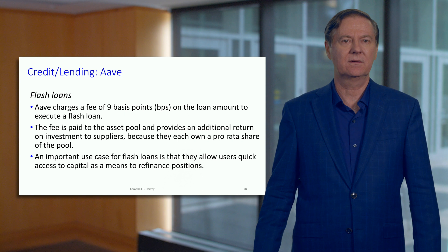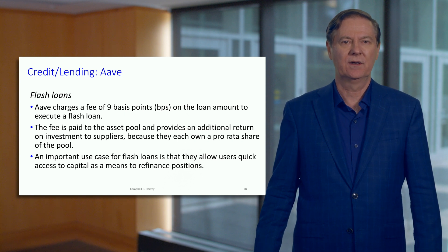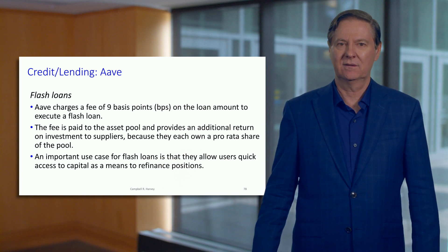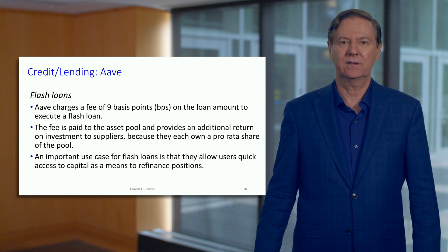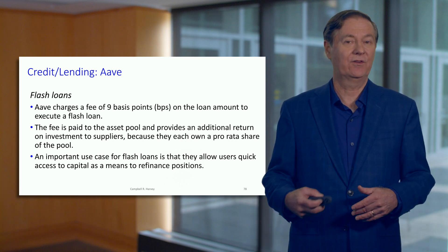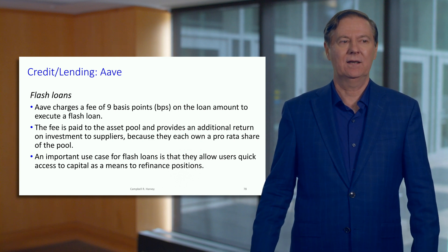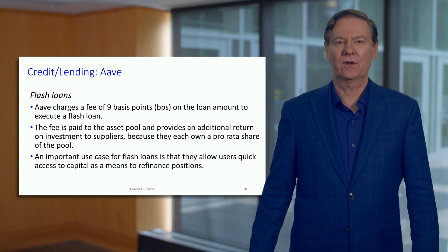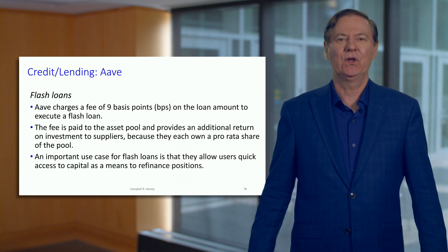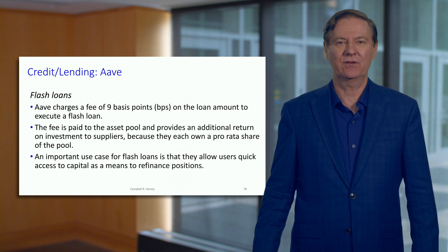Aave also offers flash loans. The fee for the loan is nine basis points — that's 0.09% — pretty cheap. These loans have zero duration and there's no obvious counterparty risk. At nine basis points, it seems cheap, and it is cheap. But I predict these rates will go down, and indeed by the time you're viewing this, the rate might already be lower.